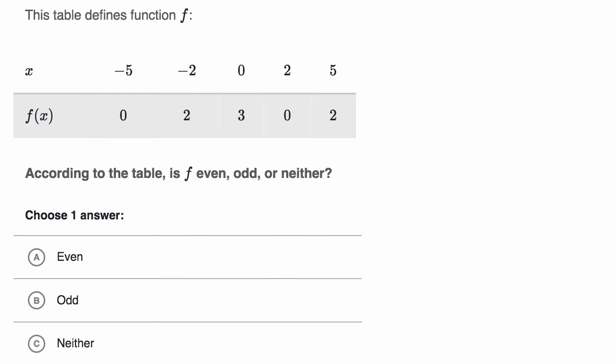Let's do another example. The table defines function f—a different function f. Is this function even, odd, or neither? Pause this video and try to think about it. Let's try a few examples. Here we have f of five is equal to two. What is f of negative five?